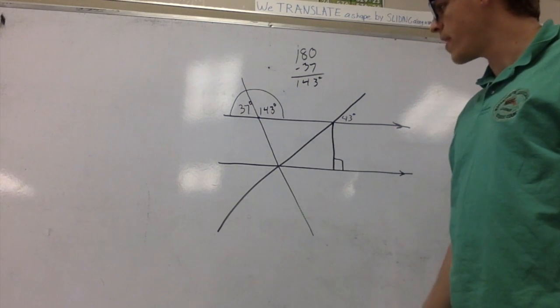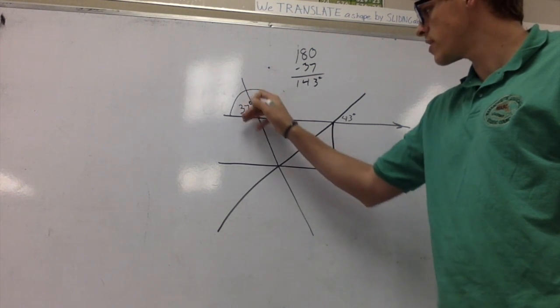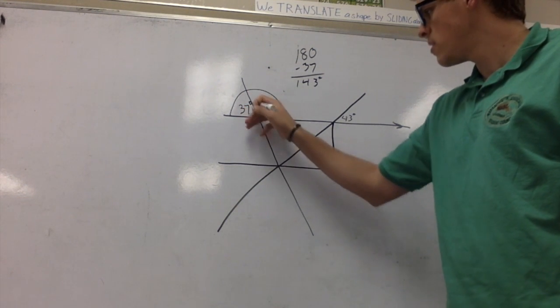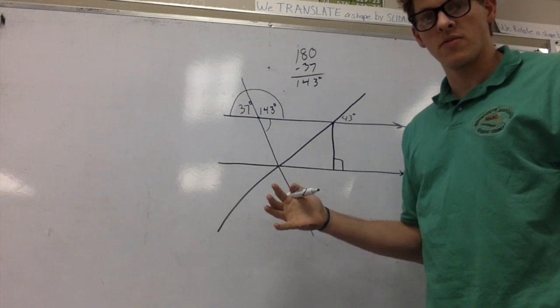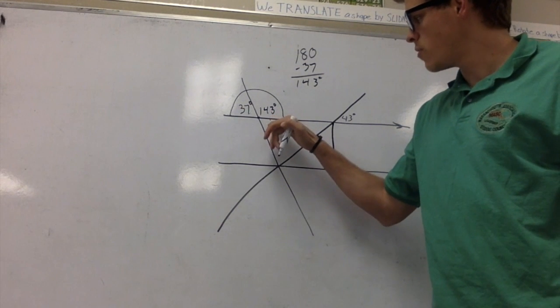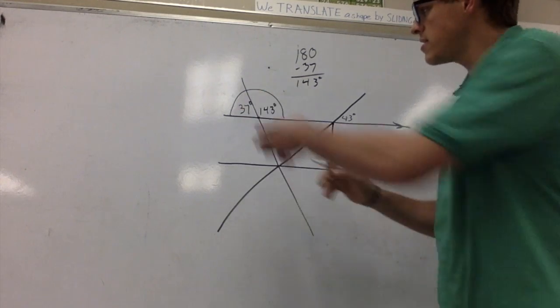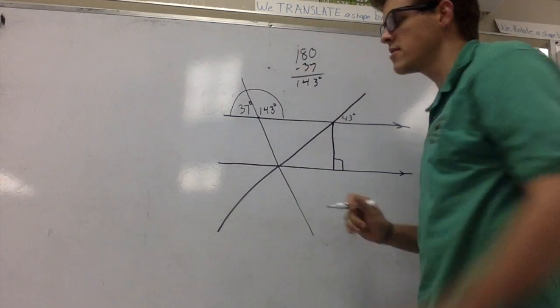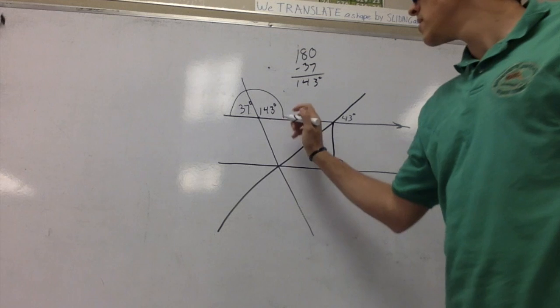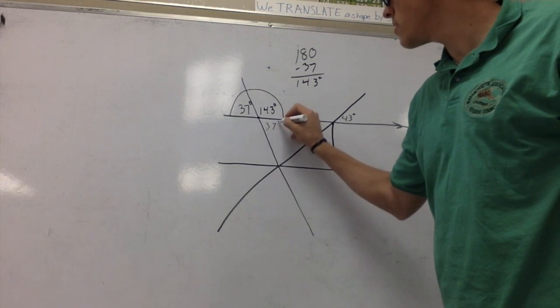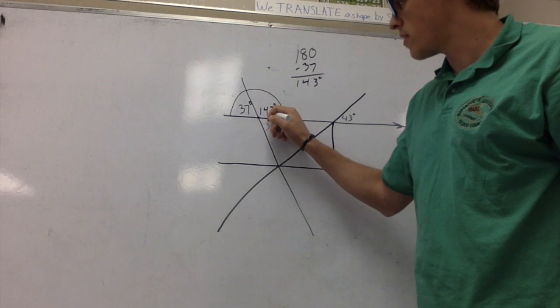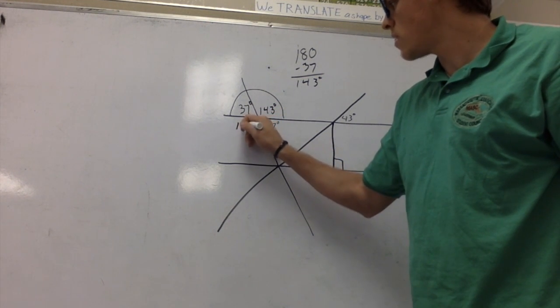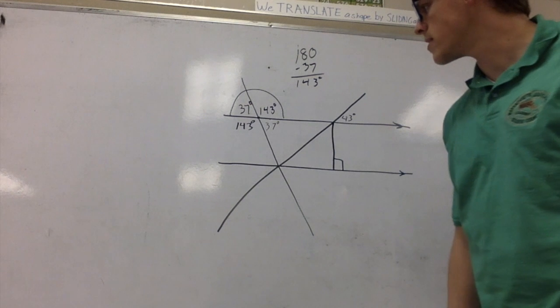From there, we can see that this one right here shares the same line with this angle right here, so we know that they're going to be vertical angles. We can rotate 180 degrees to get from here to there, so this is also 37 degrees. And then this right here is a vertical angle to here, so this also is going to be 143 degrees.